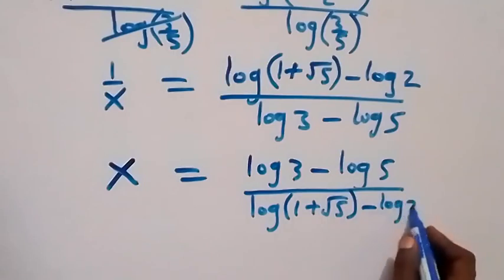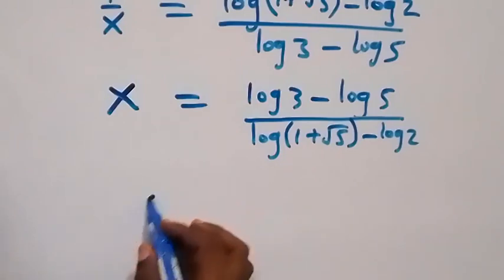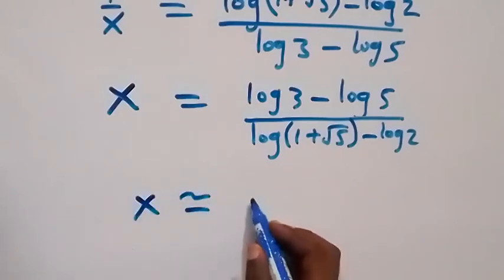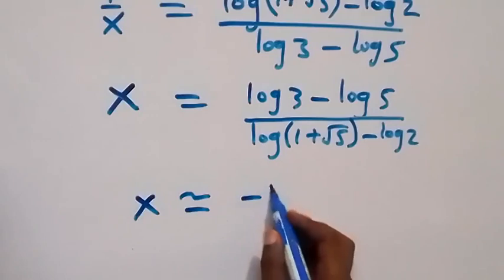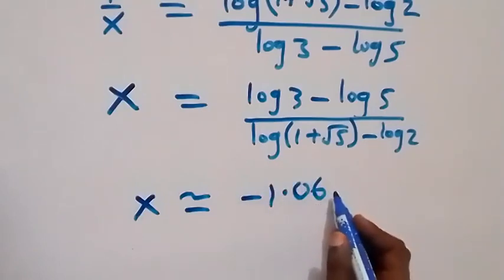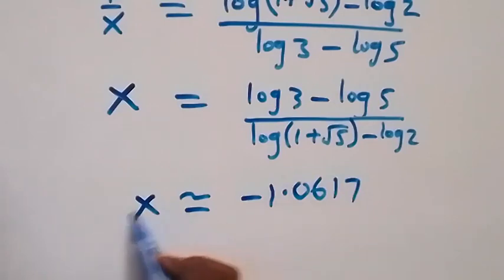So here we have the value of x, which we can also express as a decimal. x is approximately equal to minus 1.0617. So here we have the solution to the problem.